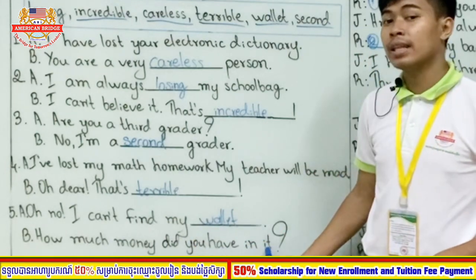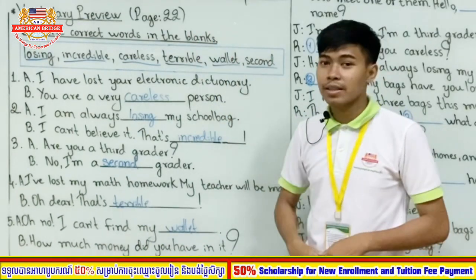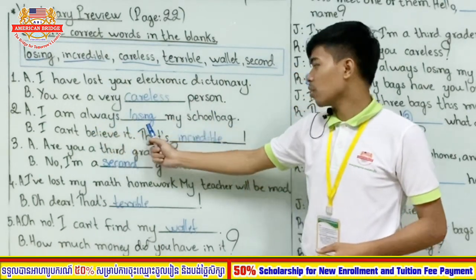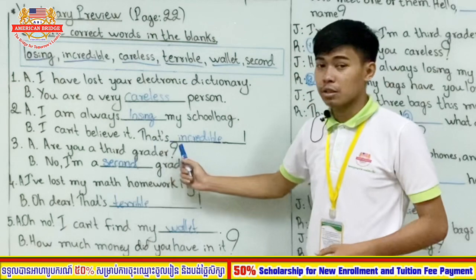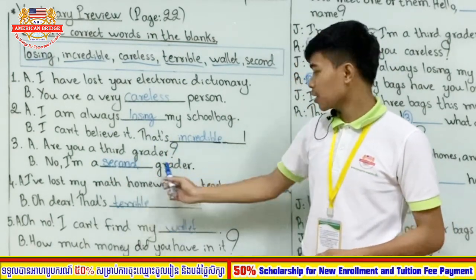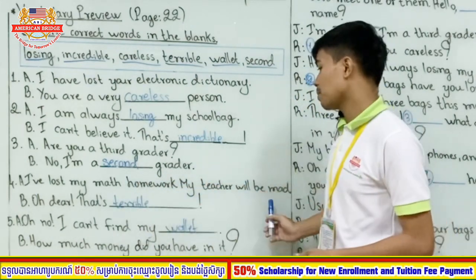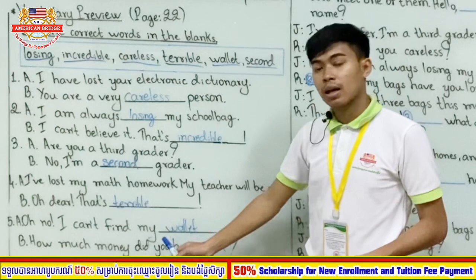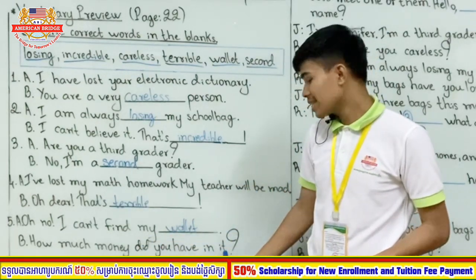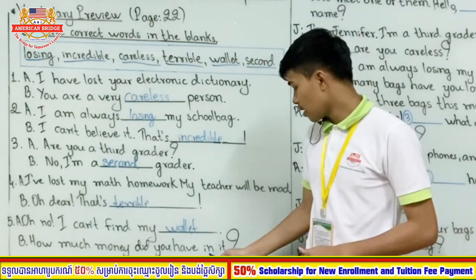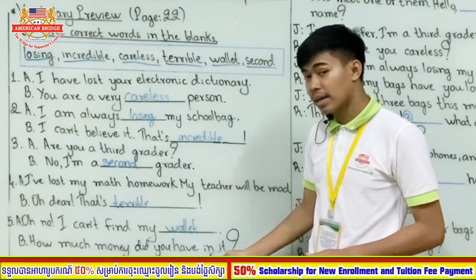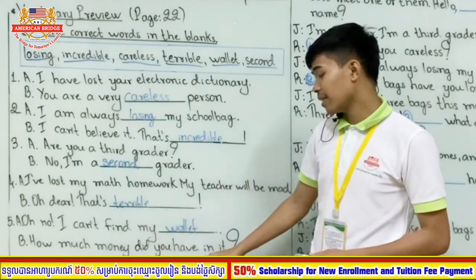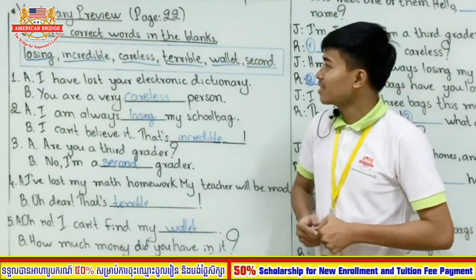Let's read through all the answers: 'I have lost your electronic dictionary — you are a very careless person.' 'I am always losing my school bag — I can't believe it, that's incredible.' 'Are you a third grader? — No, I'm a second grader.' 'I've lost my math homework — my teacher will be mad. Oh dear, that's terrible.' 'Oh no, I can't find my wallet — how much money did you have in it?' Note: when speaking fast, 'in it' links the n-sound to the vowel — 'in it.'